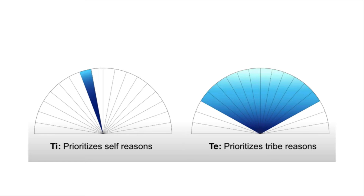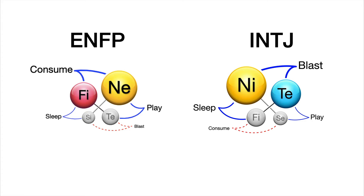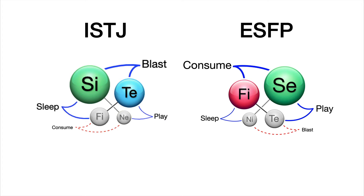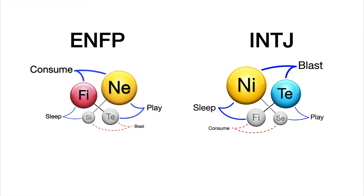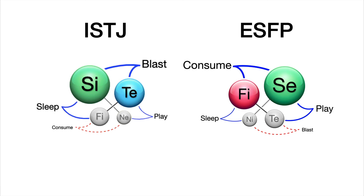The personality types ISFPs and INFPs would want to look at to figure out how to best use TE are ENFPs, INTJs, ISTJs, and ESFPs, because they have a similar function stack. For example, the ENFP and INTJ share the same function stack as the INFP, while the ESFP and INTJ share the same as the ISFP. These types are really balanced when it comes to self and tribe — they have TE and FI right in the middle, always doing things they enjoy while also making sure it works for the tribe. That's how you want to practice using TE.